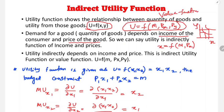In terms of money income, the value function shows satisfaction. So utility indirectly depends on income and prices — this is the indirect utility function or value function. The notation is: V = U(M, Px, Py), where Px is the price of good X and Py is the price of good Y. Indirectly, utility is a function of money income and price of goods, not directly of quantities.